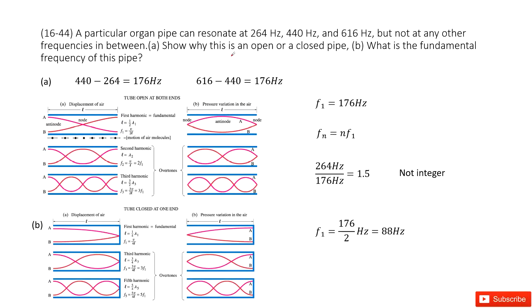We have three sequential frequencies: 264 Hz, 440 Hz, and 616 Hz. These three frequencies are in sequence. We need to determine if this is an open or closed pipe and find the fundamental frequency.